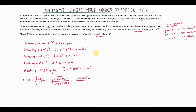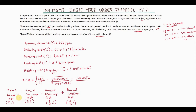The formula for total annual cost TC equals: annual purchase cost (annual demand × unit price) plus annual ordering cost (annual demand ÷ order quantity × ordering cost S) plus annual holding cost (order quantity ÷ 2 × holding cost per year H).